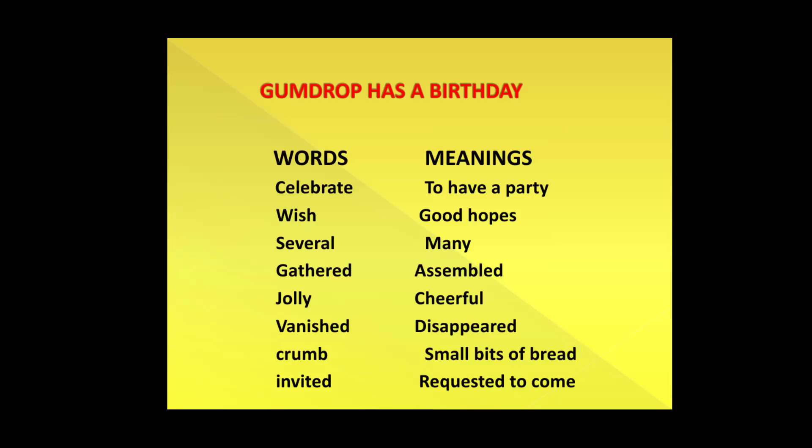Next word is jolly. Jolly means cheerful — C-H-E-E-R-F-U-L. Next word is vanished. Vanished means disappeared — D-I-S-A-P-P-E-A-R-E-D. Next word is crumb. Crumb means small bits of bread. And the last word is invited. Invited means requested to come — R-E-Q-U-E-S-T-E-D.